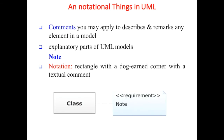The last type is notational things in UML - the note or comment. You may apply it to describe or remark any element in the model with explanatory text. It is represented as a rectangle with a dog-ear corner with a textual comment. It is optional, not mandatory.